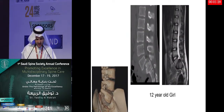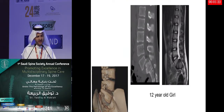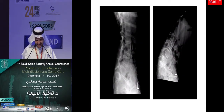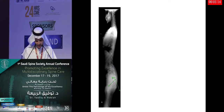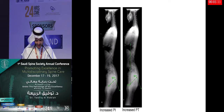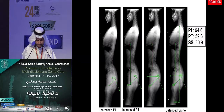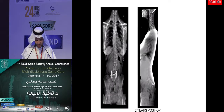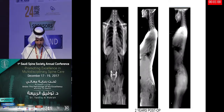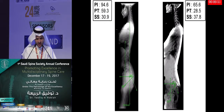Case 3: I did not use the fibular strut graft in this patient. On flexion-extension and MRI with the patient lying supine, she appeared to have a reasonable reduction, so we attempted partial reduction. She had a large pelvic incidence and increased pelvic tilt. We achieved partial reduction going from L4 to S1 with no strut but placed an anterior cage. She has done very well with improvement in sagittal parameters.